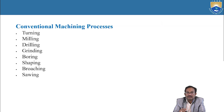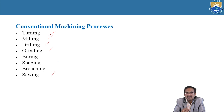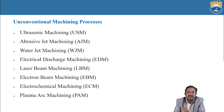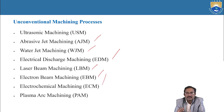Conventional machining processes include: turning, milling, drilling, grinding, boring, shaping, and broaching. Unconventional machining processes include: ultrasonic machining, abrasive jet machining, water jet machining, electrical discharge machining, laser beam machining, electron beam machining, electrochemical machining, and plasma arc machining.